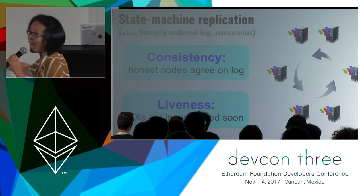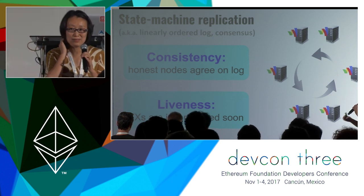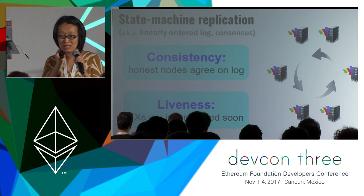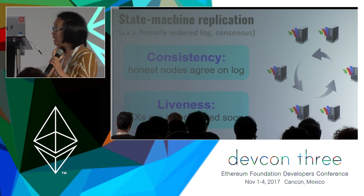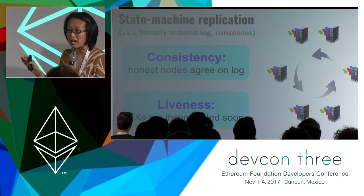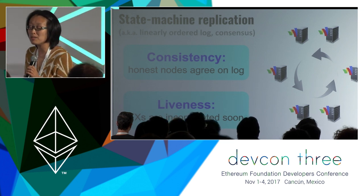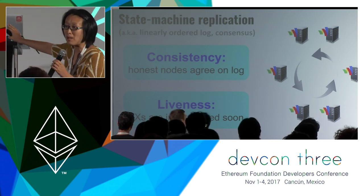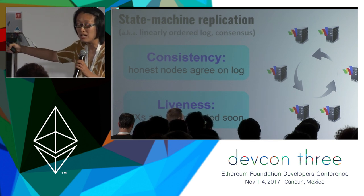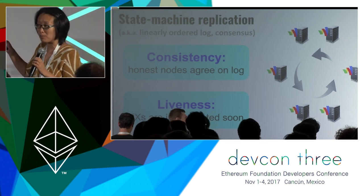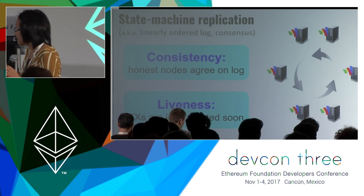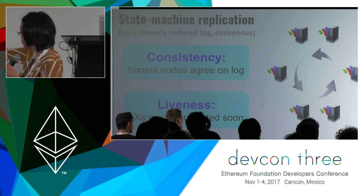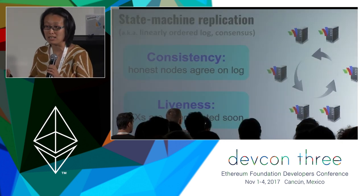At first sight, this definition seems deceptively simple. What can be so hard about agreeing on the linearly ordered log? If all nodes behave correctly, the problem is trivial. But what's interesting is if some of the nodes are compromised — they have malware and can behave arbitrarily and deviate from the protocol. Even in these cases, we want the remaining honest servers to still respect the security properties. That's why the problem is highly non-trivial.